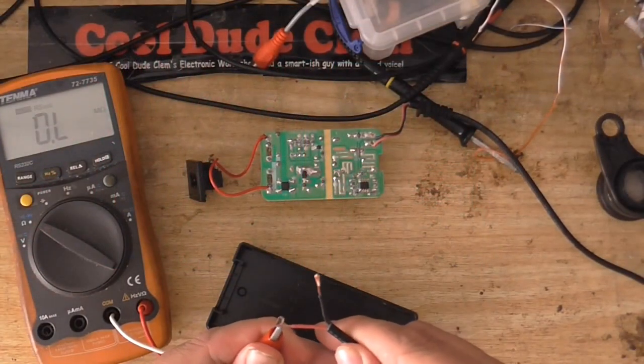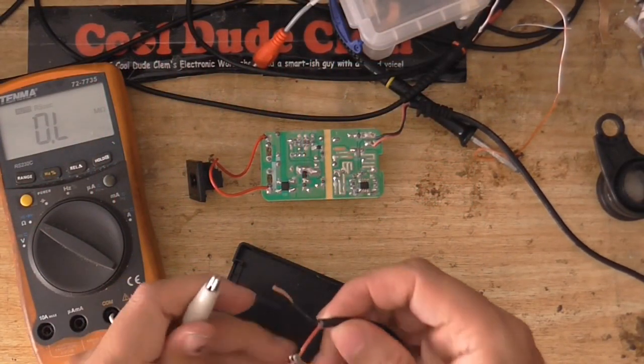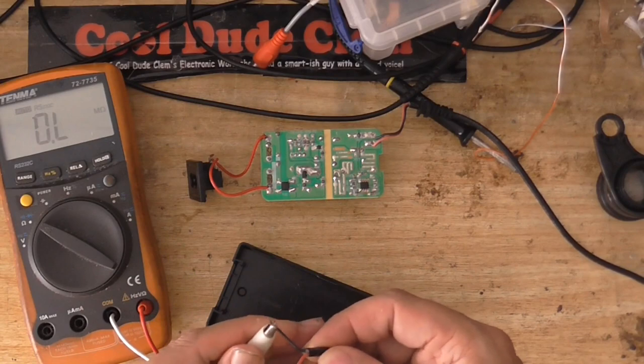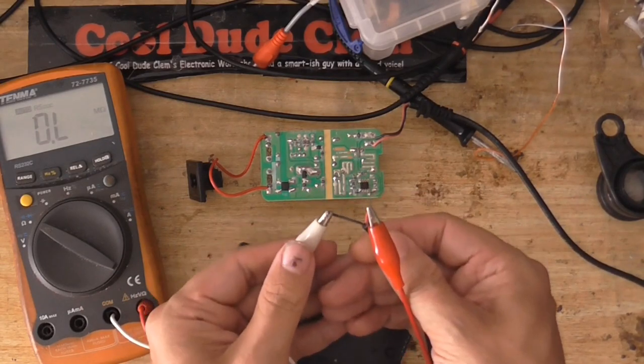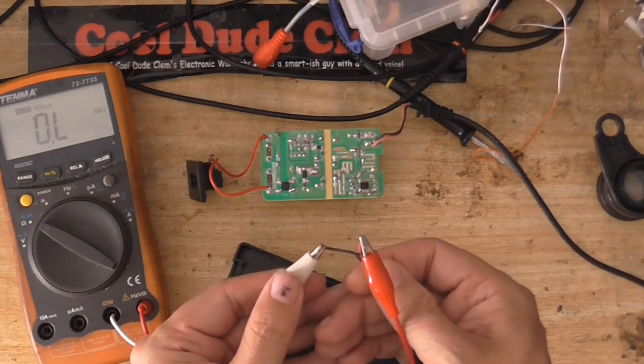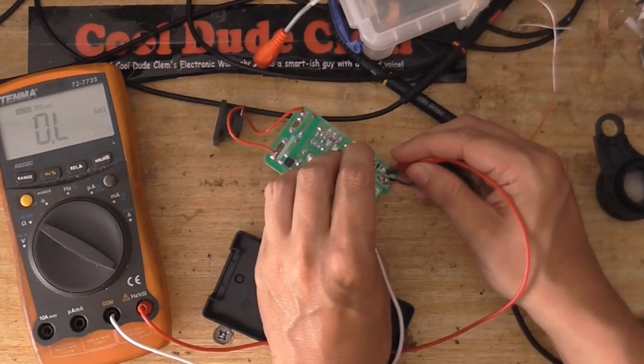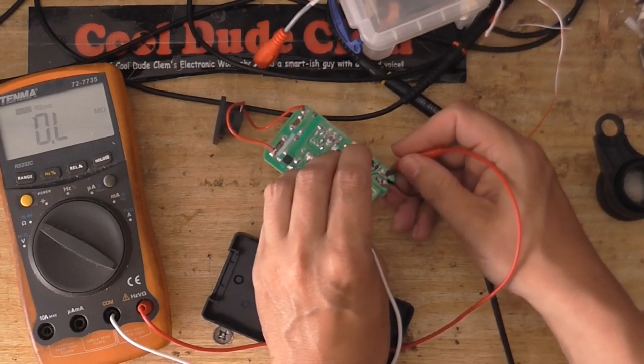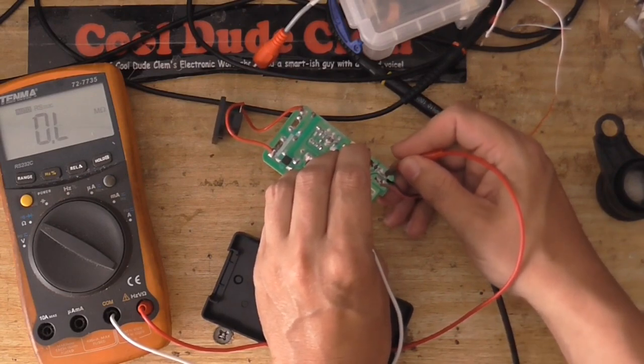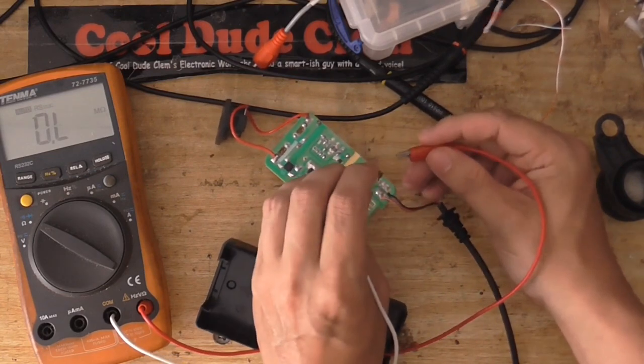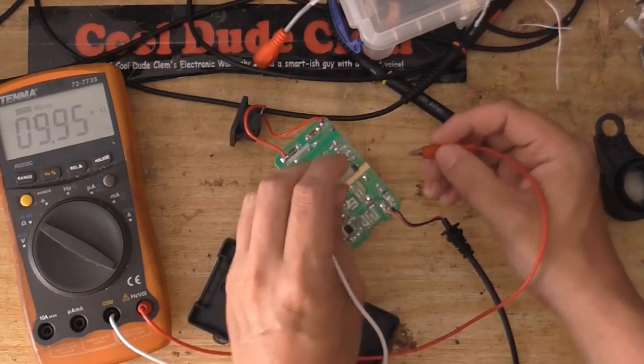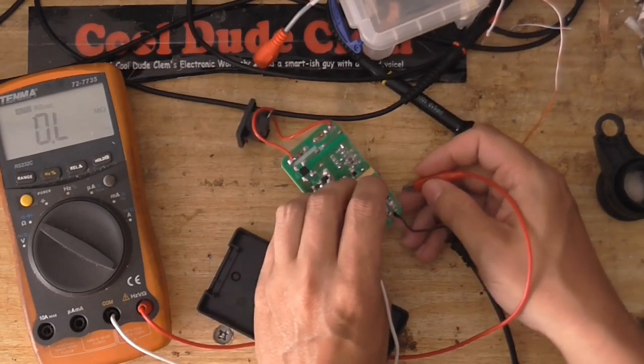I'm just going to probe across some of these components and see if there's continuity. Let's see, is there any continuity across the output? No, that's completely open. I'm just going to probe that resistor, see if that's all right. It should be 100 ohms. And no, that's completely open as well. But probes are working, aren't they? Yeah. Probes have continuity.